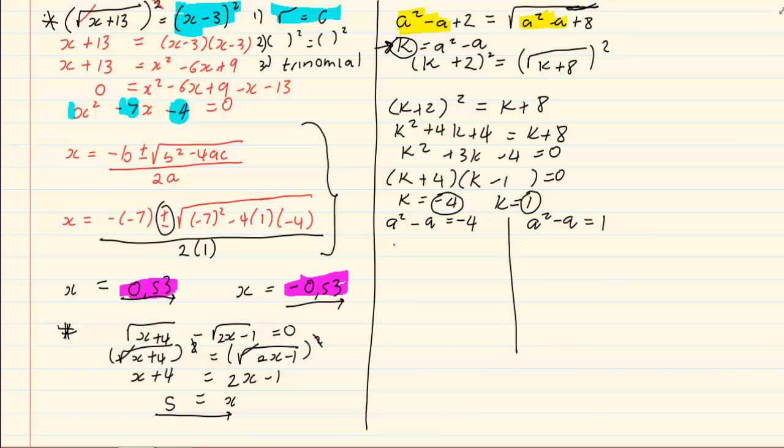Then you have to solve each equation on its own. a squared minus a plus 4 is equal to 0 and a squared minus a minus 1 is equal to 0. In both cases here you would have to use the formula.